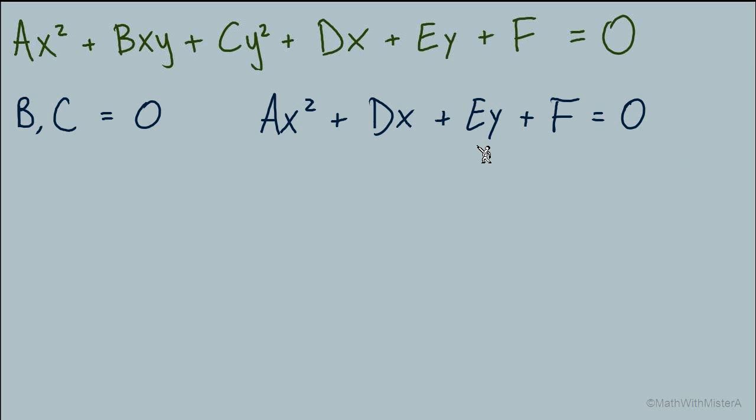We would be left with ax² + dx + ey + f = 0. Can we recognize what this equation will represent? I would recommend first finding where we have our squared variables. Circle, ellipse, hyperbola all have x squared and y squared. I'd want to notice this equation has an x squared but not a y squared. That's the case when we have a parabola.